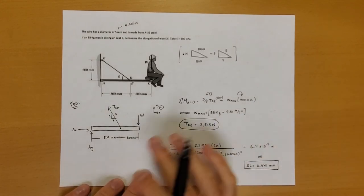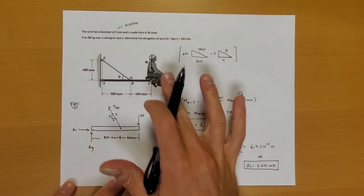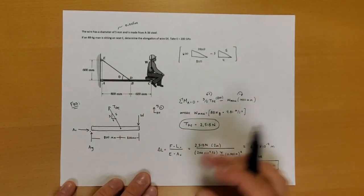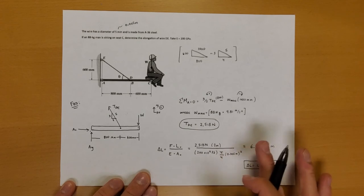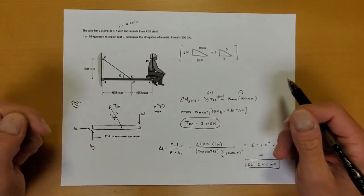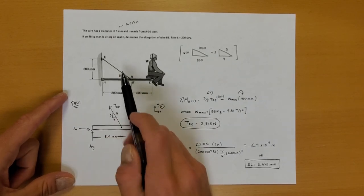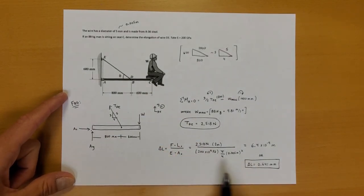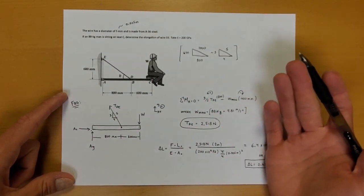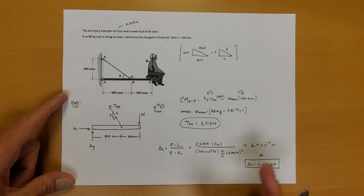As you can see in this problem, the way we use stress, strain, and material properties in statics questions is: set up the statics problem, do the basic sum of moments and sum of forces, then apply the material properties concepts. This gives you a more complete picture of what's happening to these structural systems — not only what's the tension in that wire, but the repercussions of that tension. Had we known more about yield stress or safety factors, we could go even farther and determine if this condition is actually acceptable.